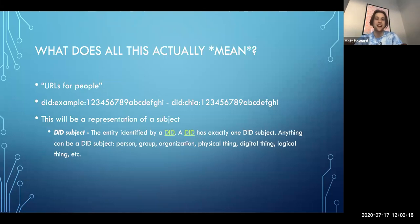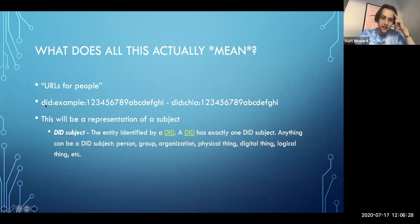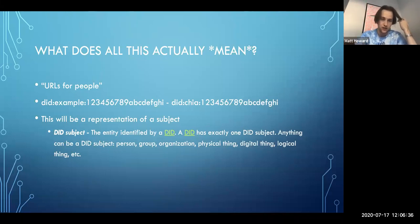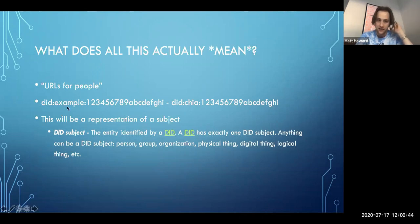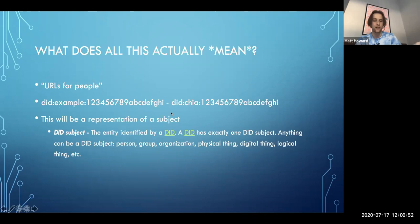What does this actually mean? Effectively, what you get is URLs for people. It takes the form of 'DID' — that's the equivalent of the protocol descriptor, like HTTP:// for a website. Because there are multiple implementations, it needs an extra section to specify which one you're looking at, so for Chia it would be 'did:chia', followed by the actual address, which is an alphanumeric string dependent on the implementation.